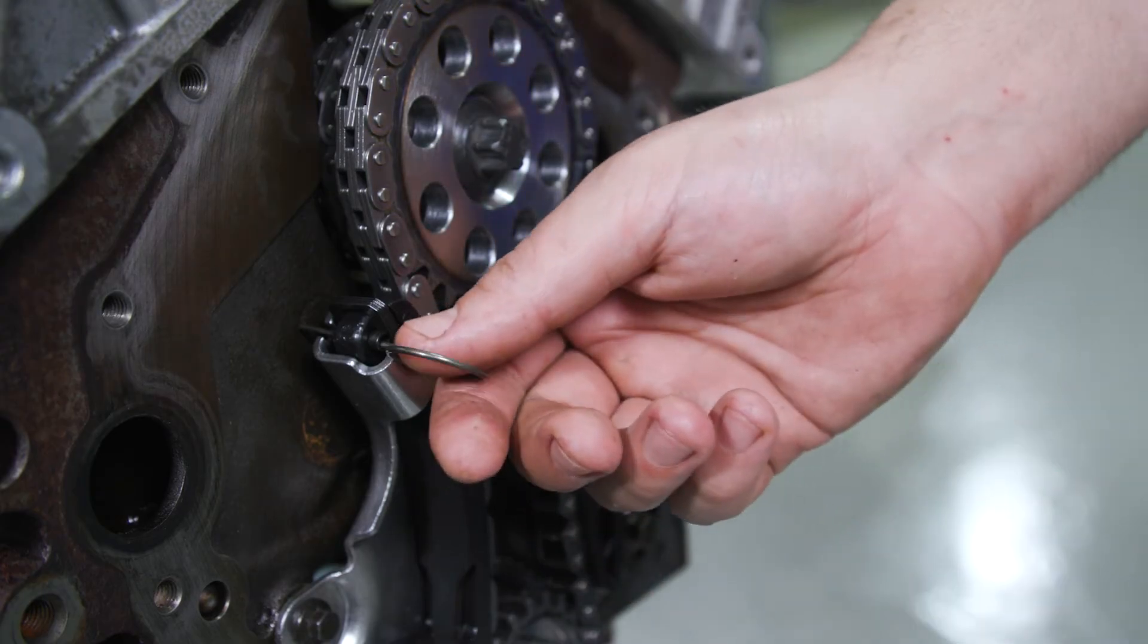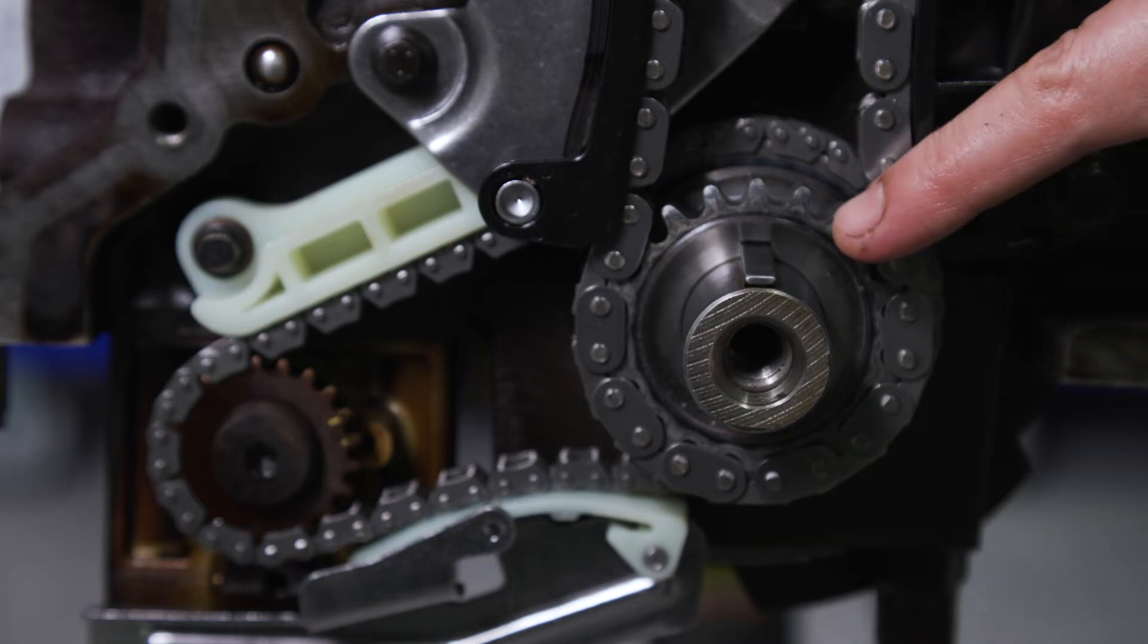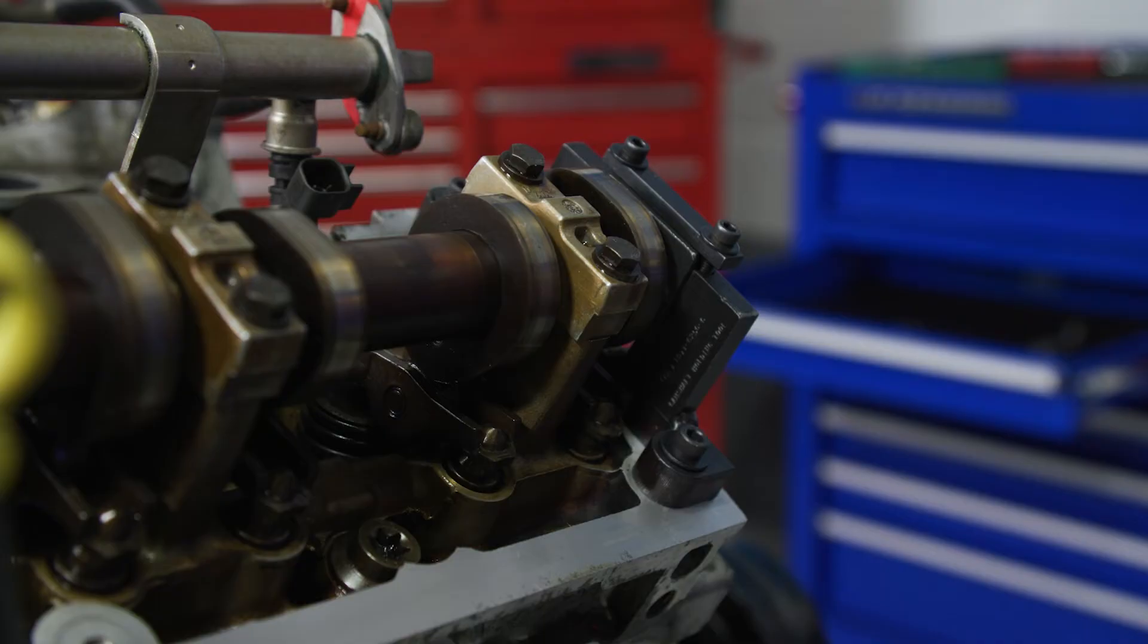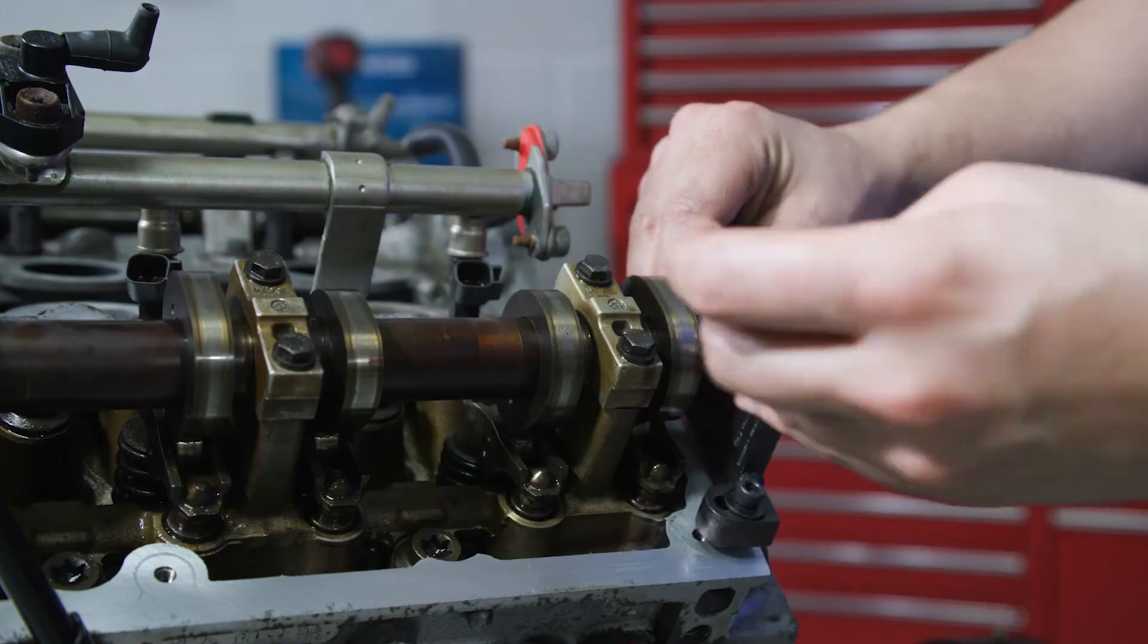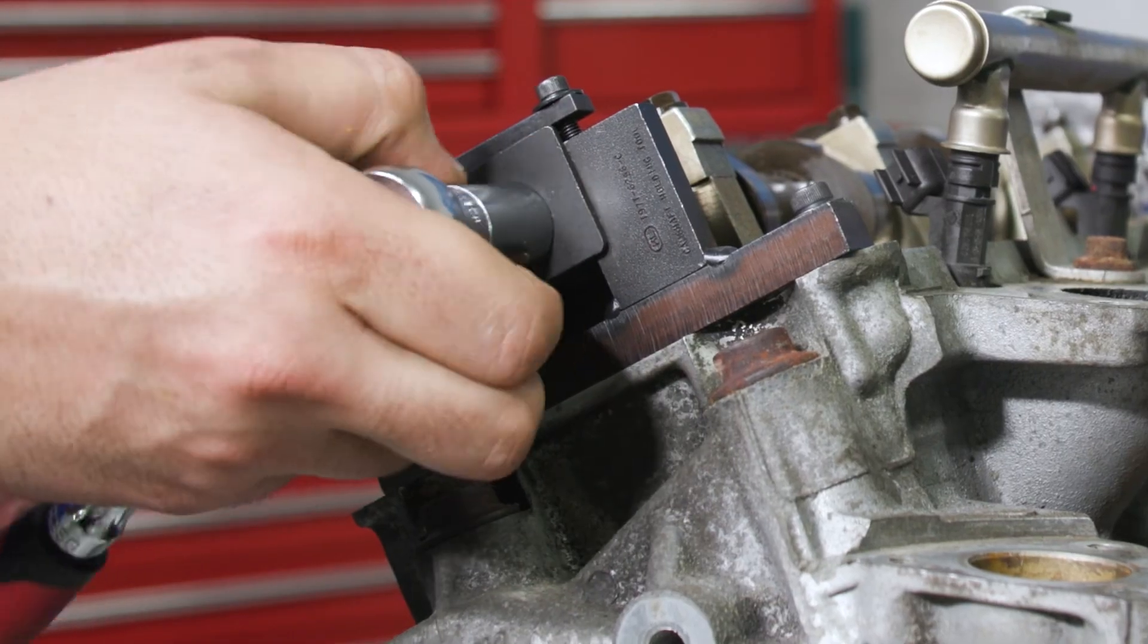Finally, it's time to remove the primary chain tensioner holding pin. Verify the keyway is at 12 o'clock and check that the cam tool is in place on the left bank. Remove the cam locking tool and camshaft sprocket tool and install on the right bank to verify that the cam has not moved during assembly.